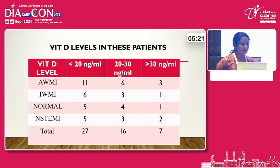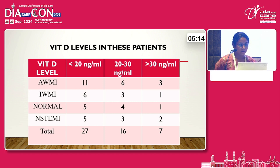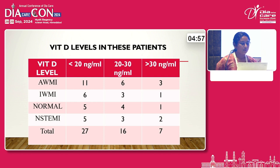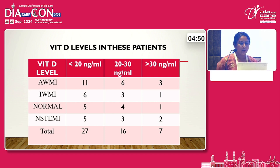With inferior MI, less than 20 ng/mL were 6 patients, 20–30 were 3 patients, and more than 30 was 1 patient. In normal patients, less than 20 were 5 patients, 20–30 were 4 patients, and more than 30 was 1 patient. In SEMI, less than 20 were 5 patients, 20–30 were 3, and more than 30 were 2 patients. In total, less than 20 ng/mL: 27 patients; 20–30: 16 patients; more than 30: 7 patients.